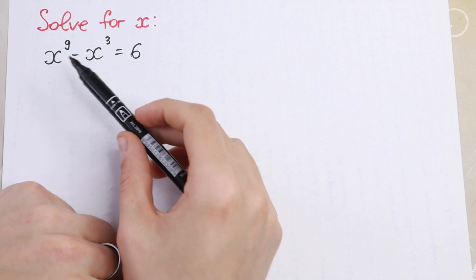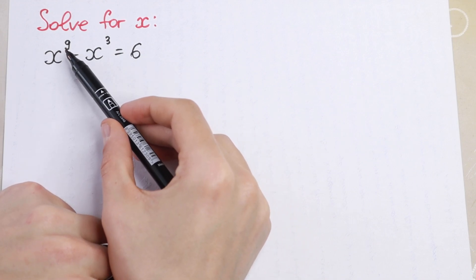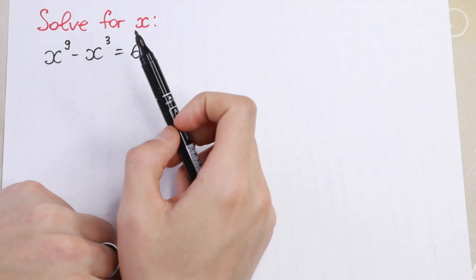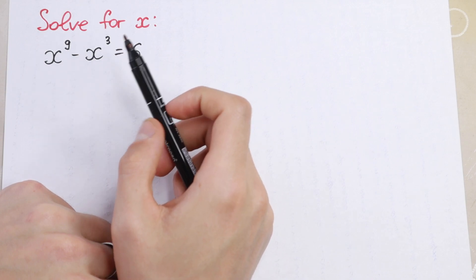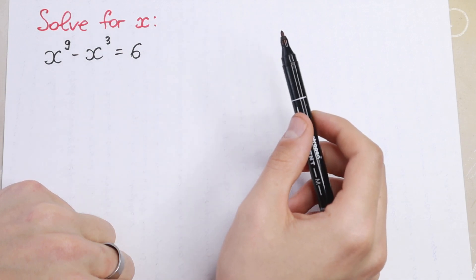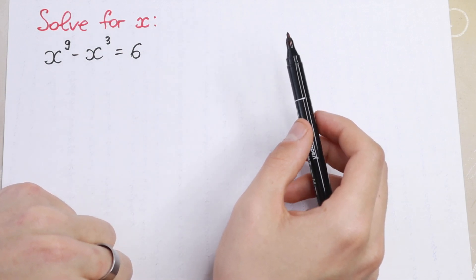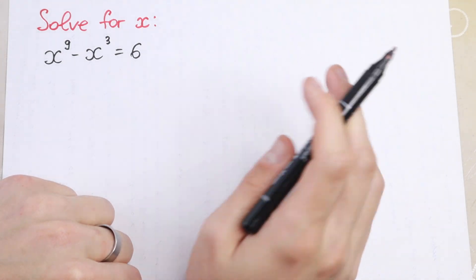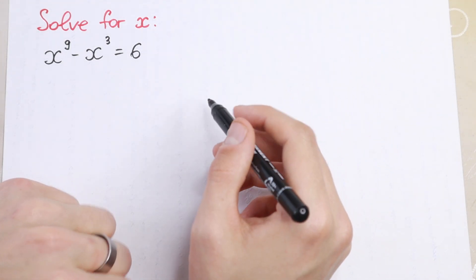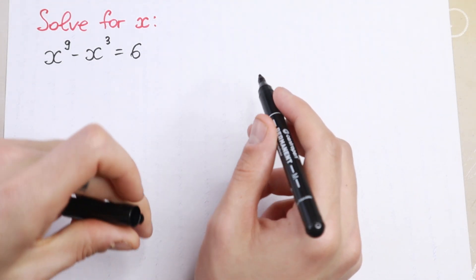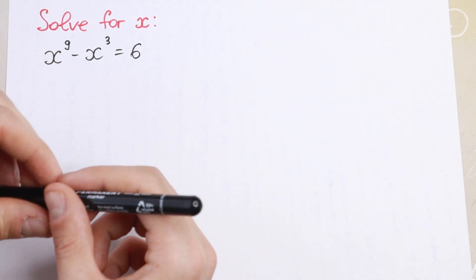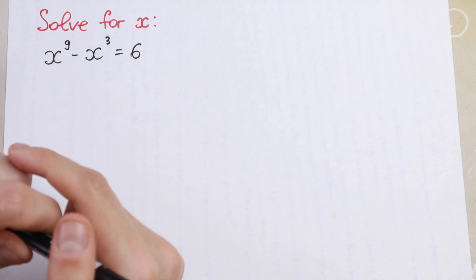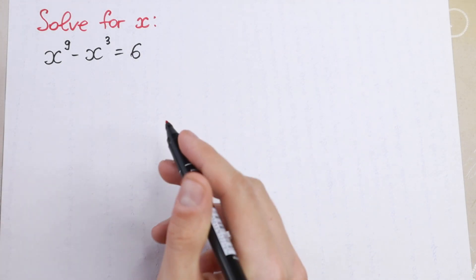We all know that if we have 9th power right here, we will have a lot of roots — no more than 9 roots — and we need to find all of these. I want to show you my approach how I solve this, and of course you can easily solve it by yourself after this video.